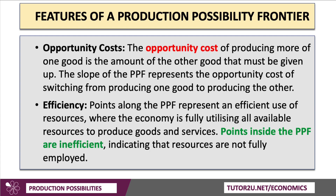We'll use it to show opportunity cost. The opportunity cost of producing more of one good or service is the amount of the other good that must be given up — a sacrifice. The slope of the PPF represents the opportunity cost of switching production from one good to another. Points along the PPF represent an efficient use of scarce resources; the economy is fully utilising all available factor inputs. Points inside the PPF are deemed to be inefficient, suggesting unemployment, underemployment, or inefficient use of factor resources.